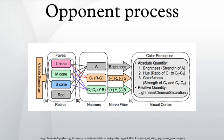In 1957, Hurvich and Dorothea Jameson provided quantitative data for Hering's color opponent theory. Their method was called hue cancellation.